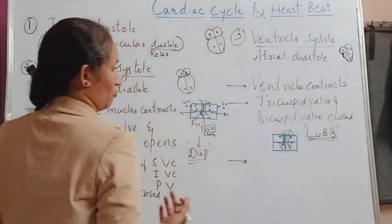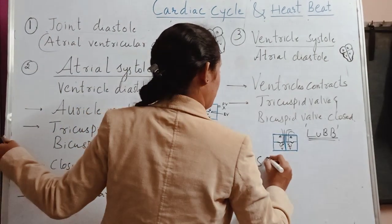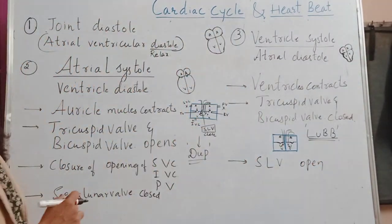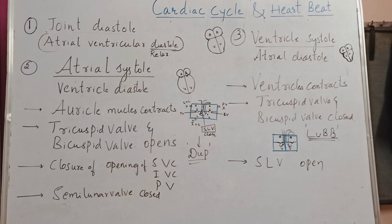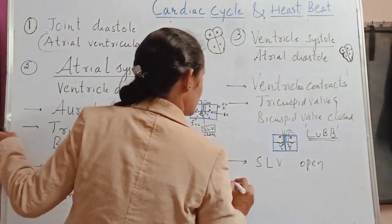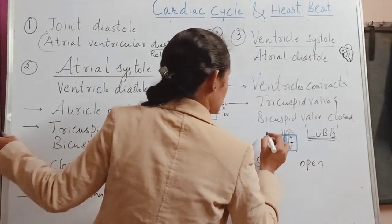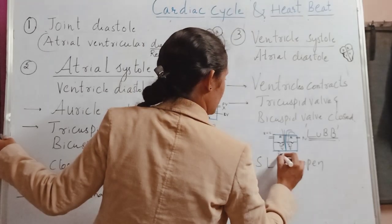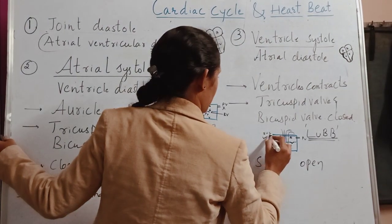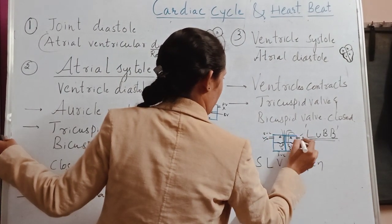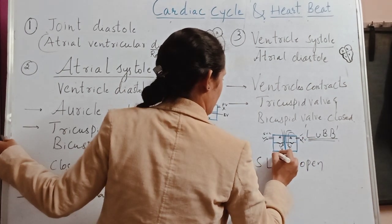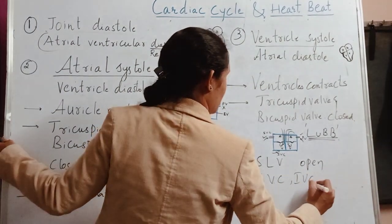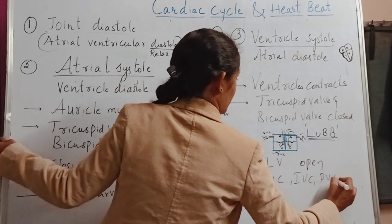During ventricular systole, the semilunar valves — that is, the pulmonary artery and the aorta — will get open, because they have to receive the blood and transport it to the lungs and other body parts. The superior vena cava, pulmonary vein, and inferior vena cava openings will also get open, so that blood flows in.